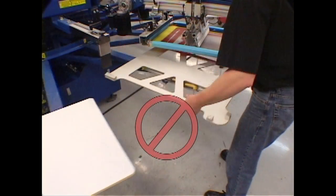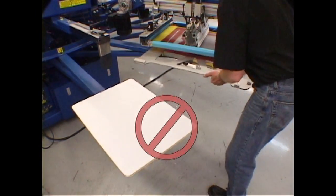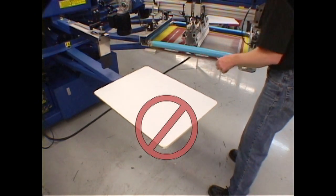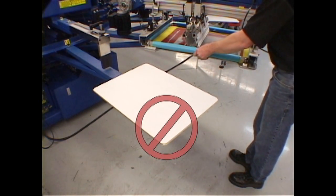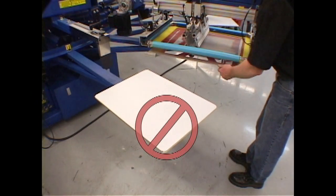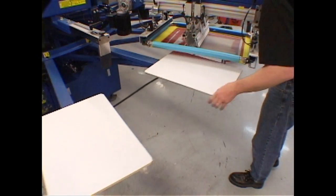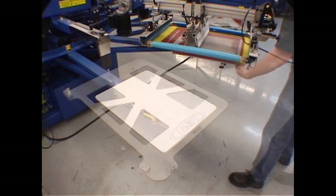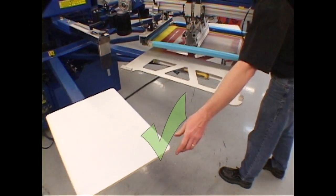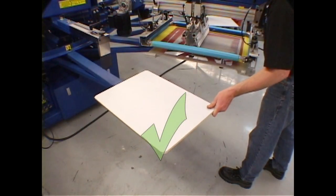Never index the press by pushing or pulling on the TriLock pallet. Indexing the carousel by grabbing the TriLock pallet can cause it to shift on the pallet bracket, preventing accurate registration. Always use a pallet on either side of the TriLock pallet to rotate the carousel.